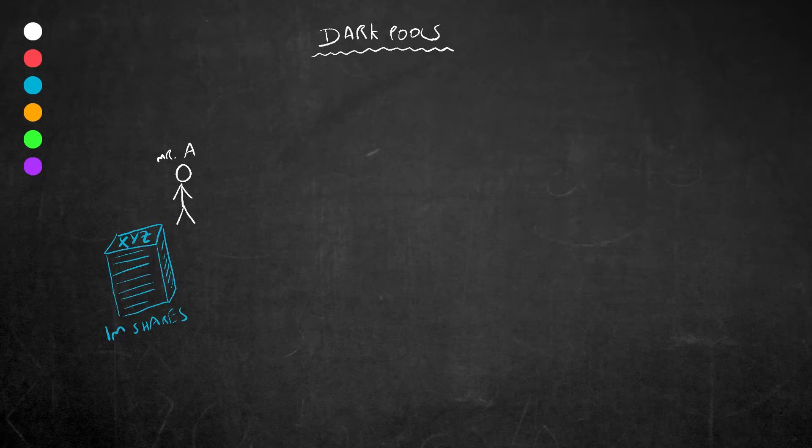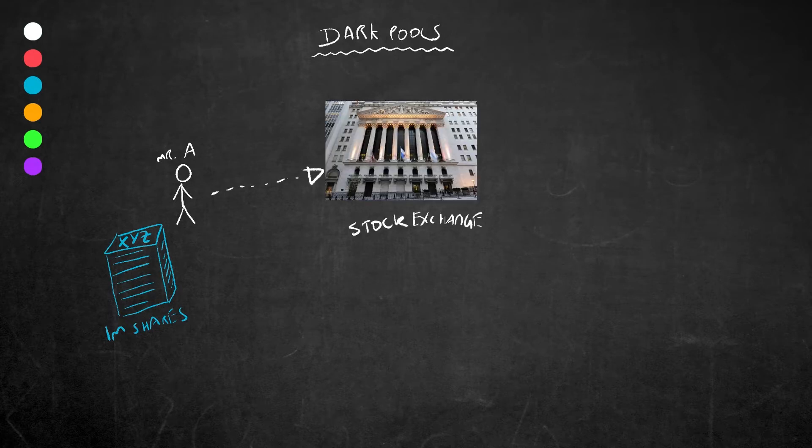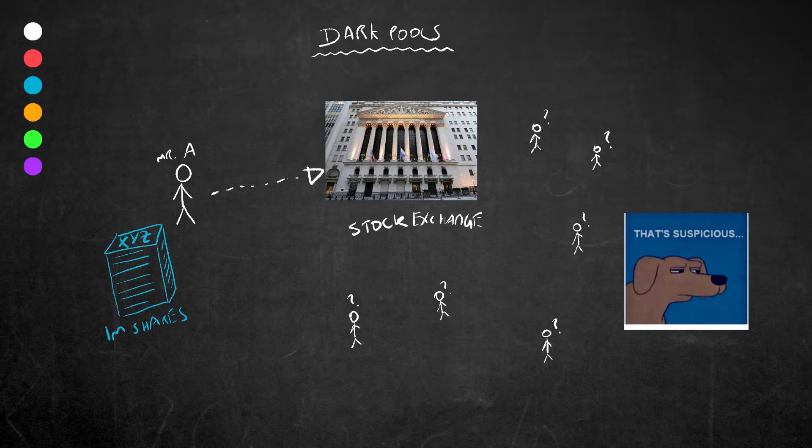If he goes through the normal stock exchange to do this, his intention to sell the shares gets added to the public order book and suddenly this draws a lot of attention. The public start wondering why Mr. A is selling shares, they start speculating on what his motives are and if they should be selling too.